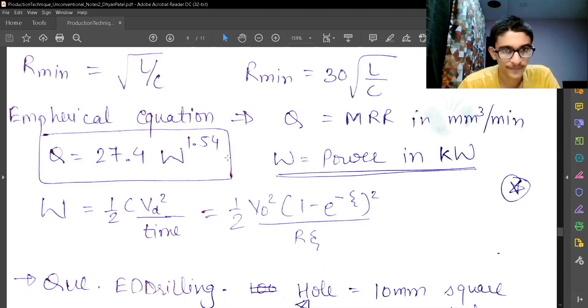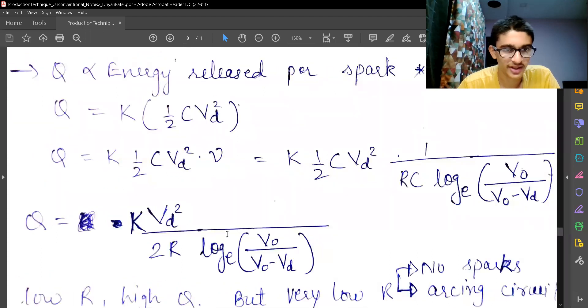The watts which we are using must be in terms of kilowatt. So my power will be half CVd square upon time. And we have already known the equation for the work done, which we have seen earlier.